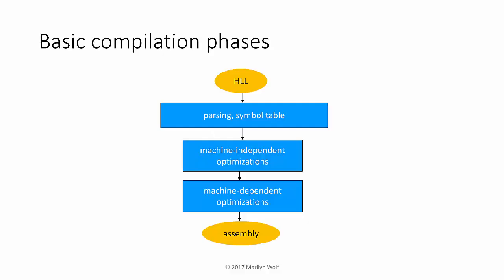During compilation we start with a high-level language program and go through several phases. Initially we parse the program to break it into statements and we create a symbol table for the various names in the program. Code optimizations are often broken into two types: machine-independent optimizations, which apply over a broad range of machines, and machine-dependent optimizations, which depend upon the particular processor and instruction set being used.